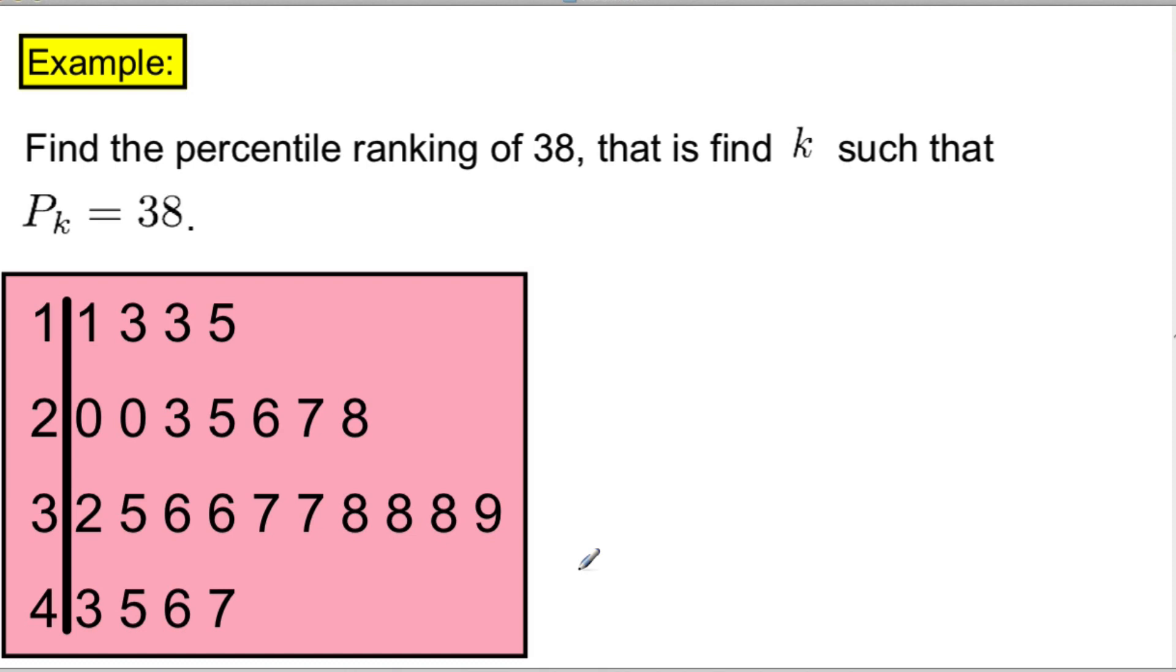In this example, we're supposed to find k such that P_k is equal to 38. n is equal to 25, and B is equal to 17, which means there are 17 numbers that are below 38.